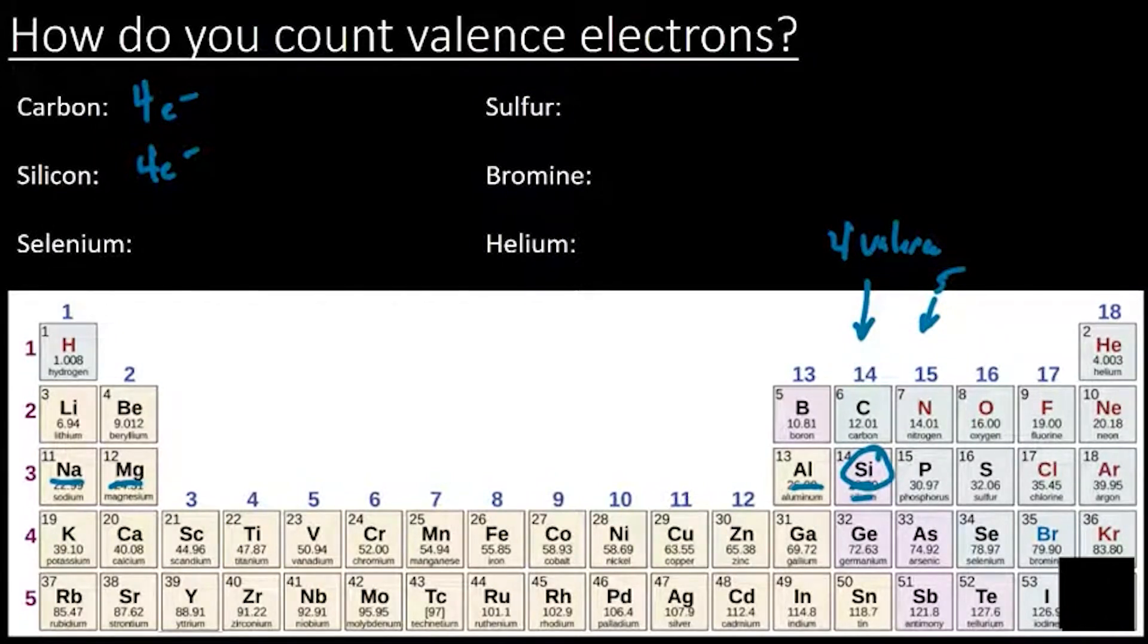So selenium is right here, and we count 1, 2, 3, 4, 5, 6. Notice we, again, skipped that d block in the middle. So selenium has 6.